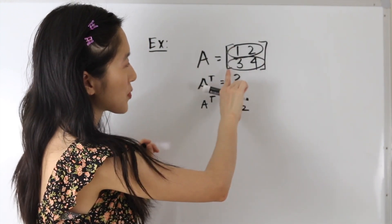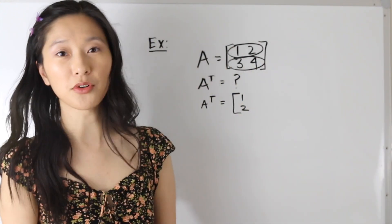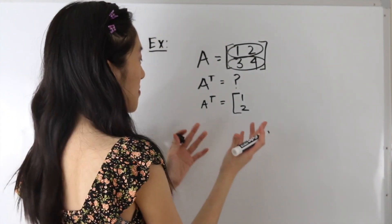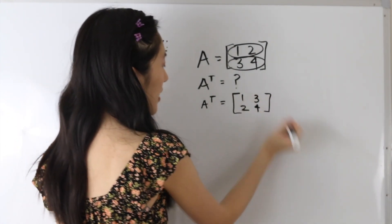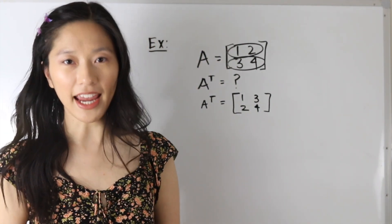And here we have 3, 4, which was also a row, and that is going to be a column in our transpose matrix. So we get 3 and 4 here. So here is our transpose of matrix A.